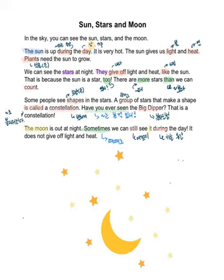It does not give up light and heat. But there is a difference, right? There is a difference between the moon and the sun. What's the difference? The difference is that the moon does not give up light and heat. 달은 light and heat. 빛과 열을 내지 않아요. 주지 않아요.